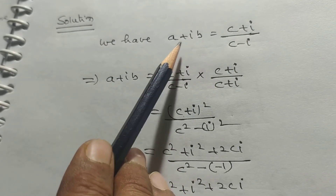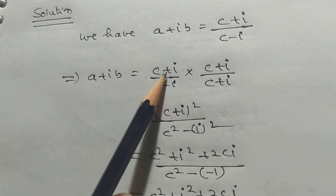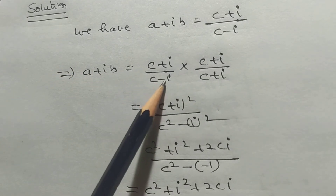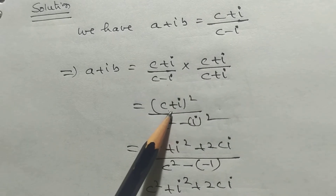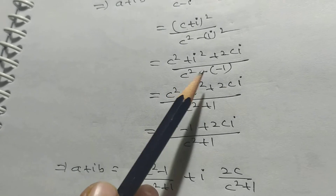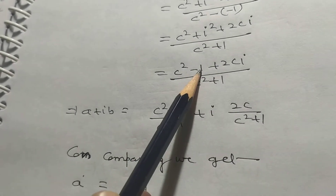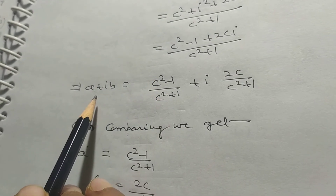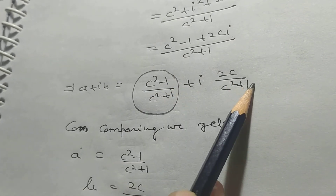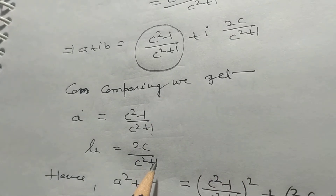We have a+ib = (c+i)/(c-i). We multiply the numerator and denominator by the conjugate of the denominator, that is (c+i). So the numerator becomes (c+i)² and the denominator becomes c²-i². Expanding: (c²+i²+2ci)/(c²+1), which is (c²-1+2ci)/(c²+1). Now in standard form a+ib: comparing, a = (c²-1)/(c²+1) and b = 2c/(c²+1).